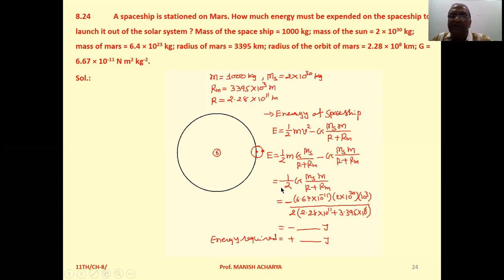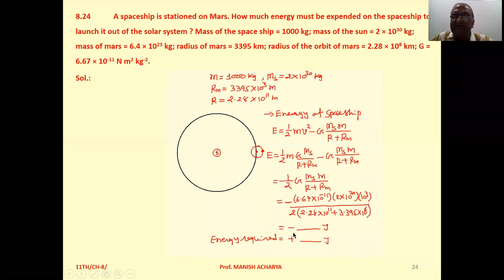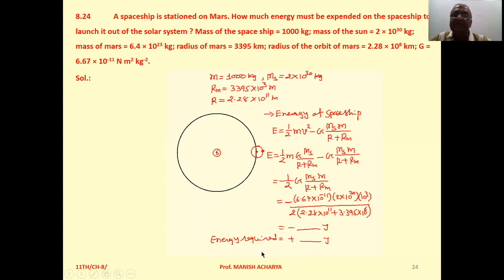So total energy will come to minus ½GMₛm upon r plus rₘ. Now substitute the values of G, Mₛ, m, r, rₘ. The total energy comes to minus this much joule, so energy required is plus this much joule. Clear to all of you?